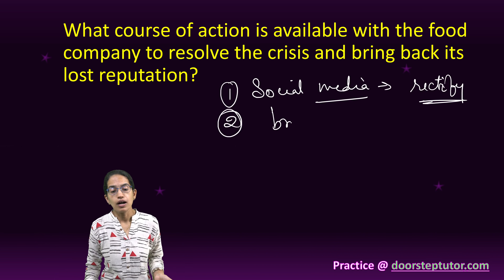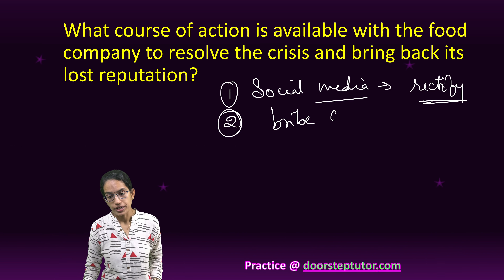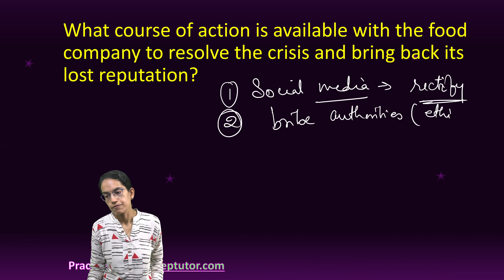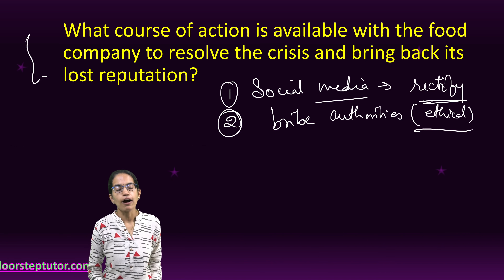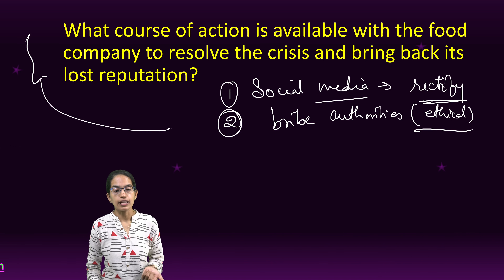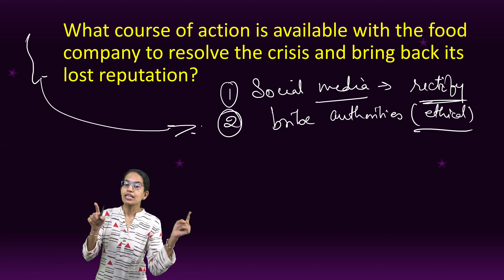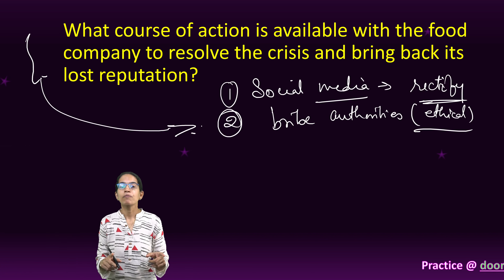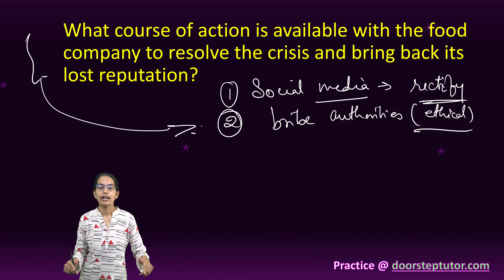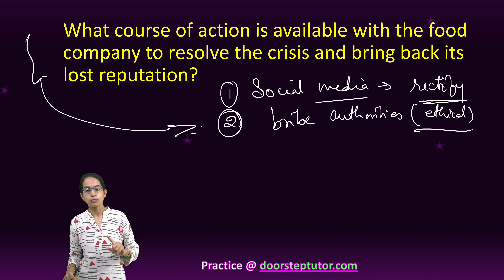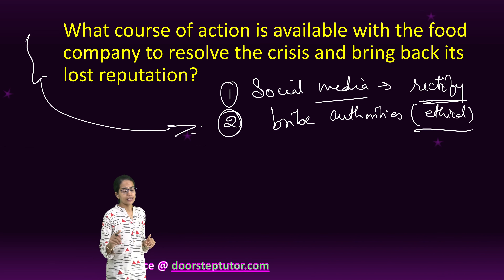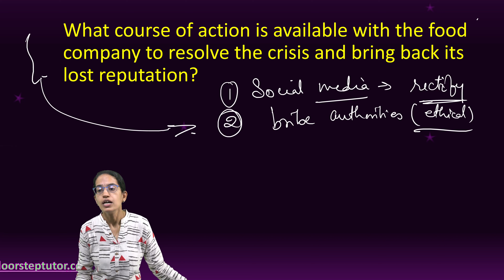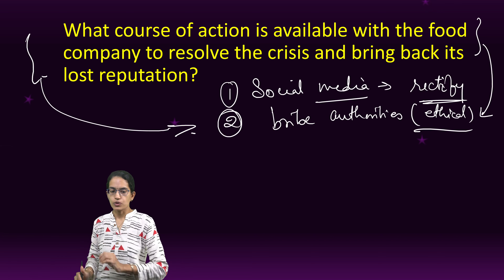A second option is to bribe the authorities — but this is not an ethical perspective. Since this question is talking about options available to the company, the company could bribe authorities to tell them not to disclose that they are selling rejected export products. However, as mentioned, this is not an ethical point of view, though from the company's perspective it could be taken into consideration.